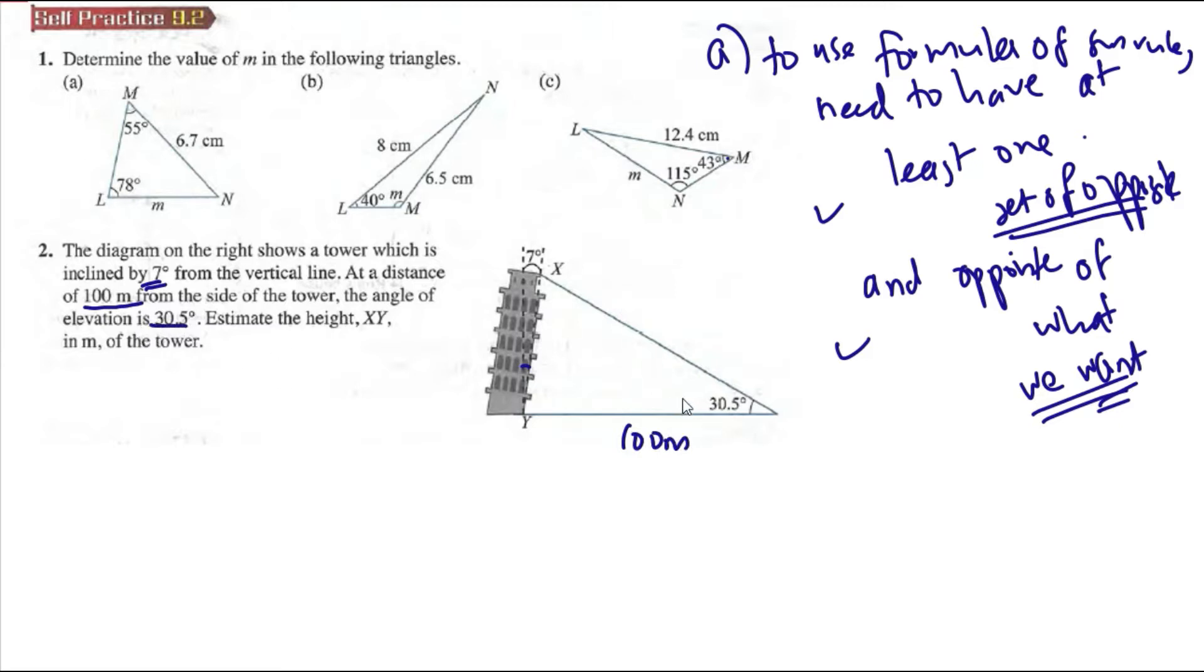Angle of 30.5. To use the sine rule, we must satisfy two conditions. At least we have one set of opposite - we have 100 meters here and we have the angle here.